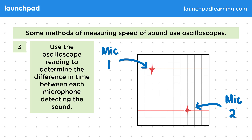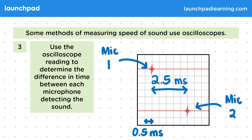Let's suppose we set the scale so that one square represents 0.5 milliseconds. Since the signals are short, it's easy to measure the distance between them on the display. This would have been much harder if we had long wave patterns. Then using our scale, we can see this represents a time of 2.5 milliseconds.